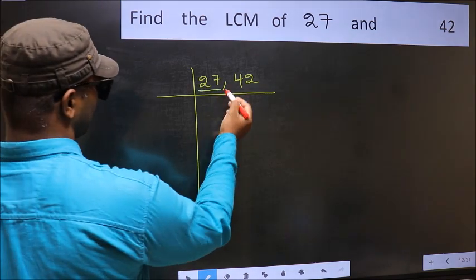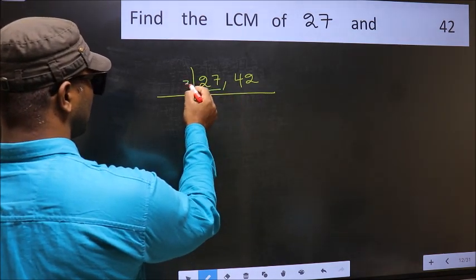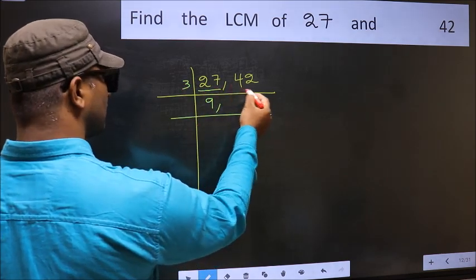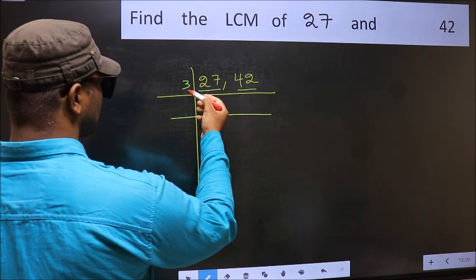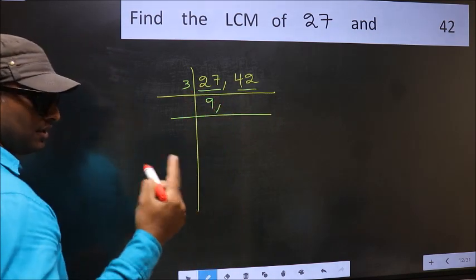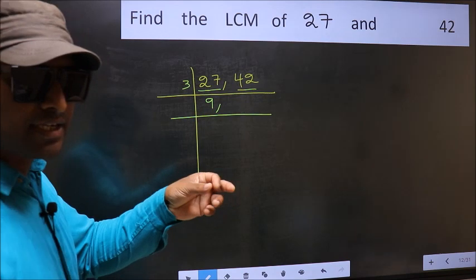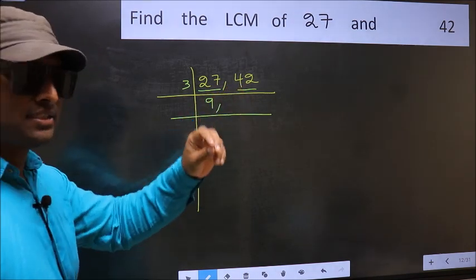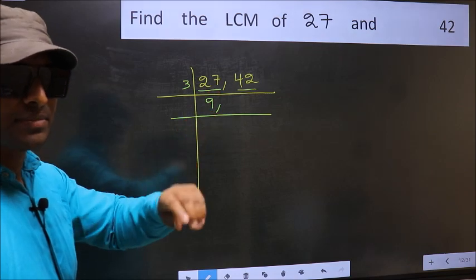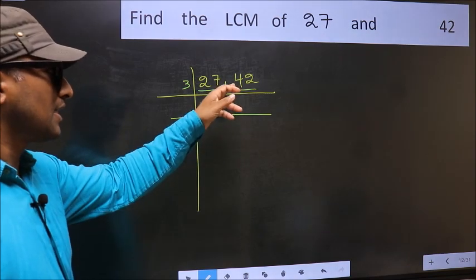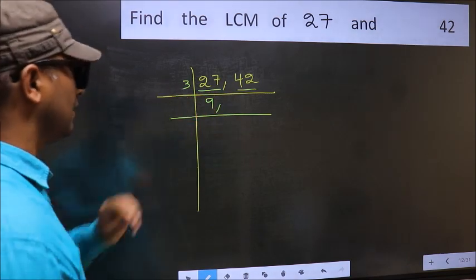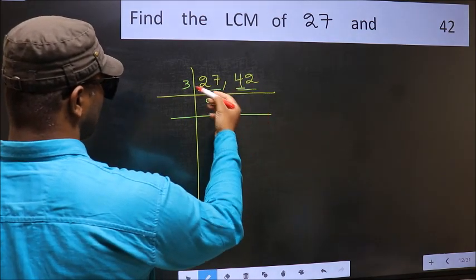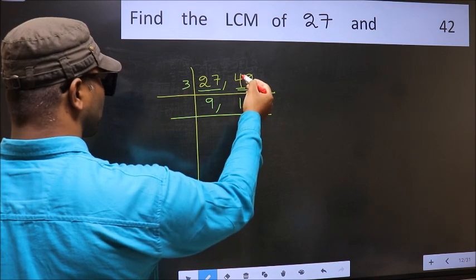27 is 3 nines. For the other number 42, check whether 42 is divisible by 3 or not. For that, add the digits: 4 plus 2 we get 6, and 6 is divisible by 3, so 42 is also divisible by 3. The first division: a number close to 4 in the 3 times table is 3 ones, which is 3.